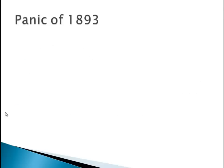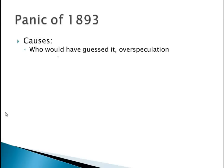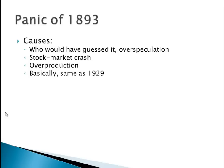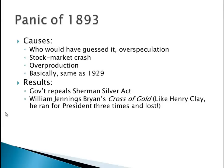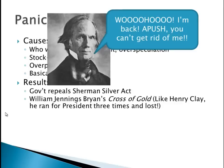Panic of 1893 — what causes a panic? Over-speculation. We have a stock market crash and over-production. Basically, this is the exact same thing we'll see with 1929 and the Great Depression. As a result, the government repeals the Sherman Silver Act — no more buying silver. We also have William Jennings Bryan, who is very, very famous. We'll see him for multiple chapters. He gives a speech called the Cross of Gold Speech. Just like Henry Clay, he ran for president three times and lost.